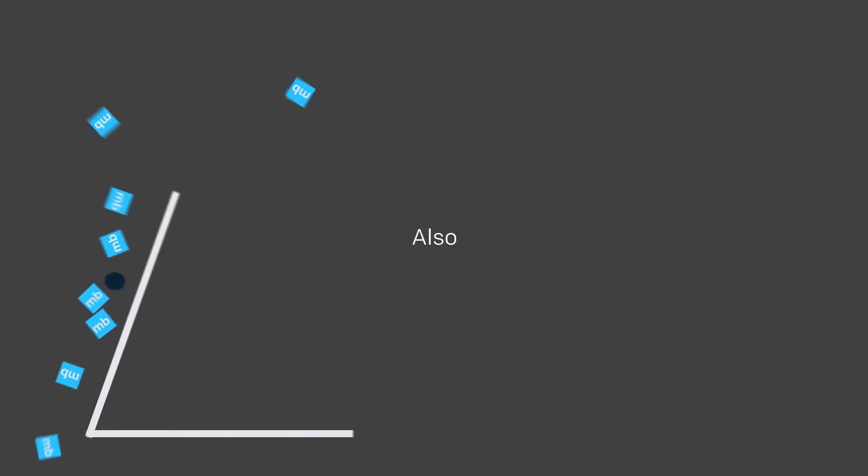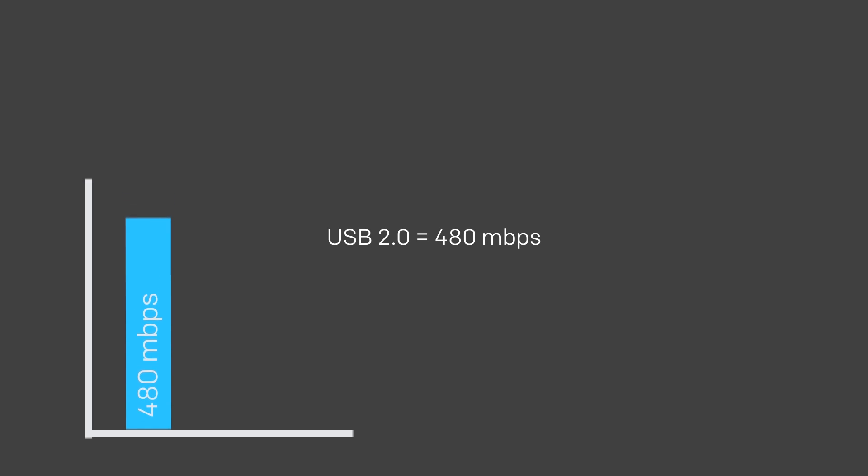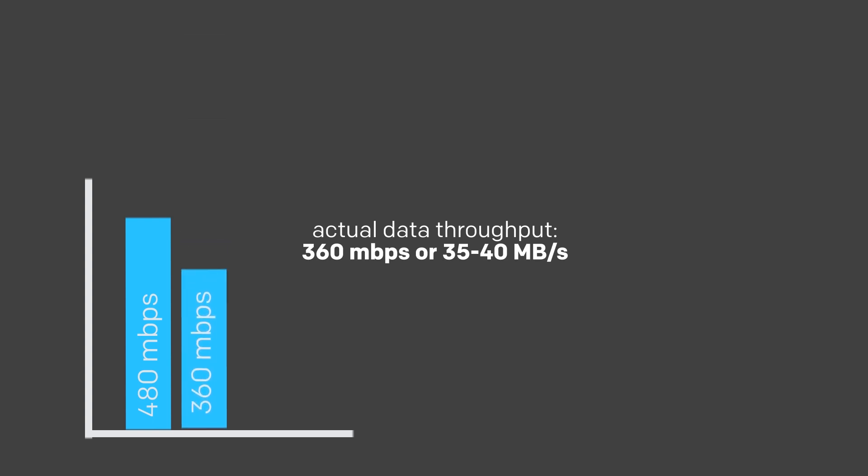Also, we need to point out that although the advertised speed for USB 2.0 is 480 megabits per second, the actual speed you will get is about 360 megabits per second, or 35 to 40 megabytes per second. This is due to many different variables, and test results may vary depending on the computer used for testing.